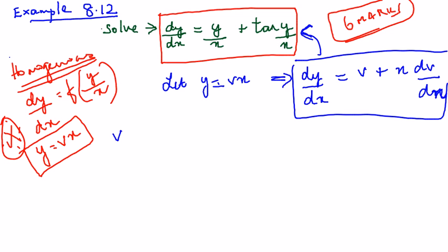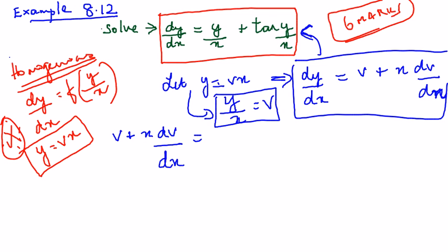So let us substitute this in this equation. So v plus x dv by dx equals y by x. What is y by x? From this equation we get y by x equal to v. So let's just substitute here. This becomes v plus tan of v. Now it's the same game. You have to bring the v to one side and the x to one side. So what I'm going to do is cancel this v and this v, and what remains is x dv by dx equals tan v.